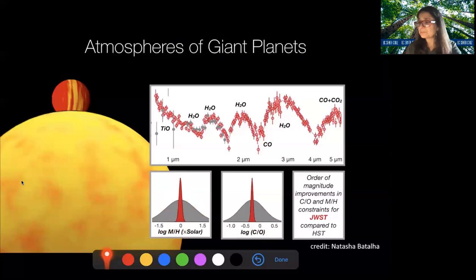And you see that the probability distribution function becomes extremely sharp, very narrow error bars using Webb. So we're going to get order of magnitude improvements in the C to O and metallicity measurements with or using Webb compared to Hubble. And that's very exciting.